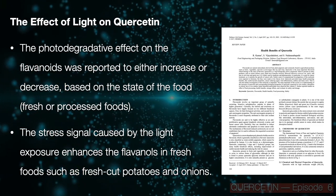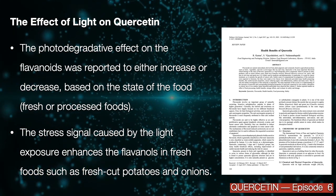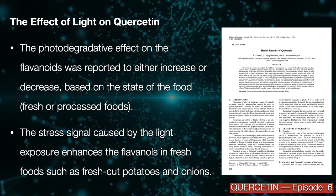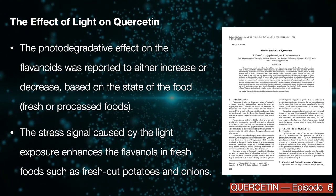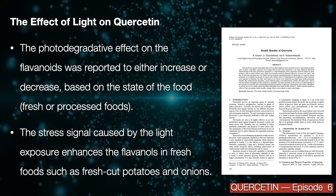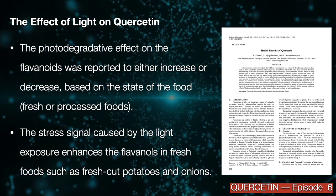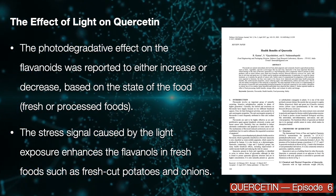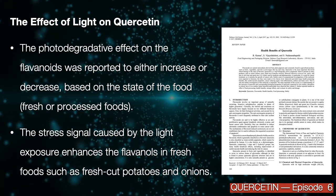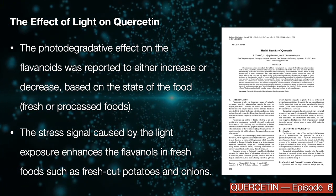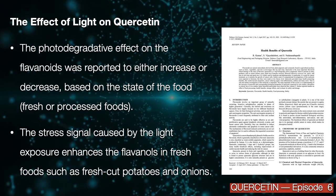The effect of light on quercetin — the photodegradative effect on the flavonoids — was reported to either increase or decrease based on the state of the food, i.e. fresh or processed foods. The stress signal caused by the light exposure enhances the flavonoids in fresh foods such as fresh cut potatoes and onions.